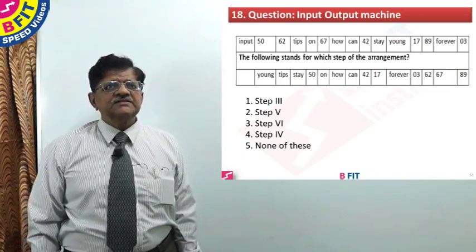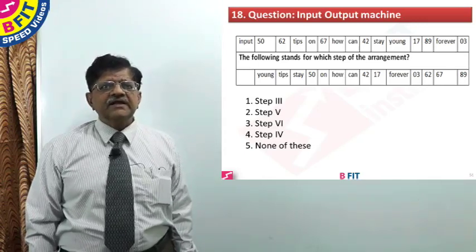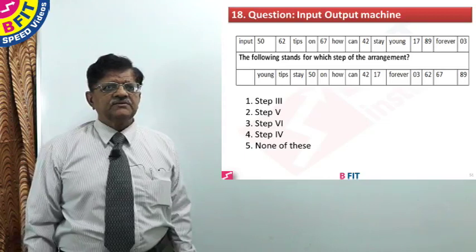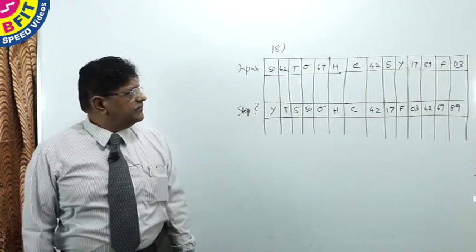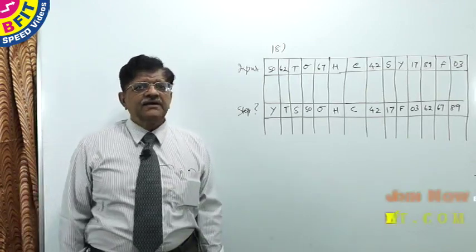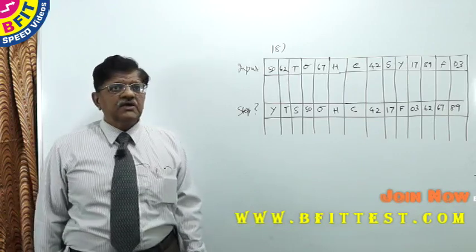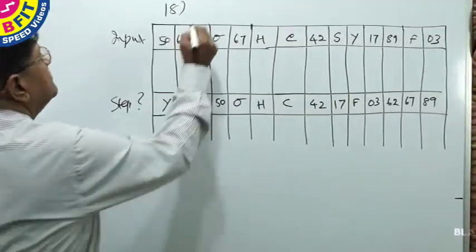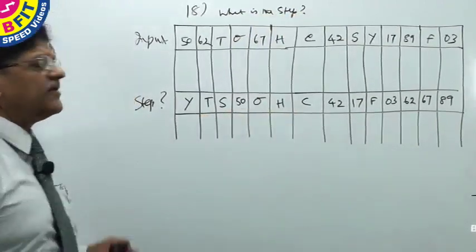The input is: 50, 62, tips, on, 67, how, can, 42, stay, young, 17, 89, forever, 0, 3. The question is: the following stands for which step of the arrangement? I have already drawn the table and filled the contents, with 16 various variables. We have to find out which step a given arrangement represents.